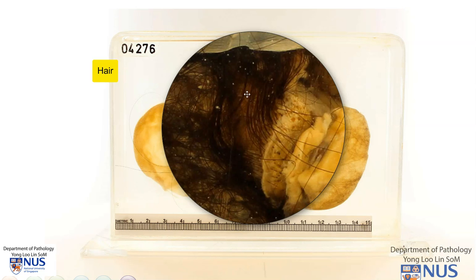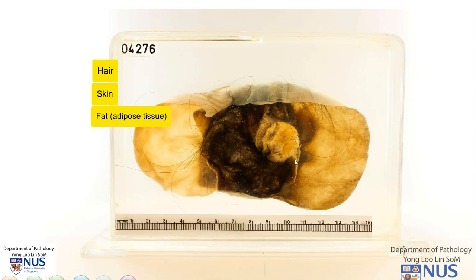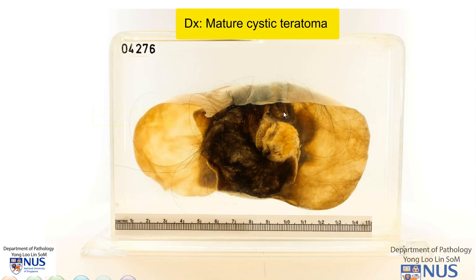In this area, there is a brownish area that resembles skin. This is likely to be epidermis, and then we have the subcutaneous structures. This yellowish area may represent adipose tissue or fatty tissue. The diagnosis here is a mature cystic teratoma of the ovary.